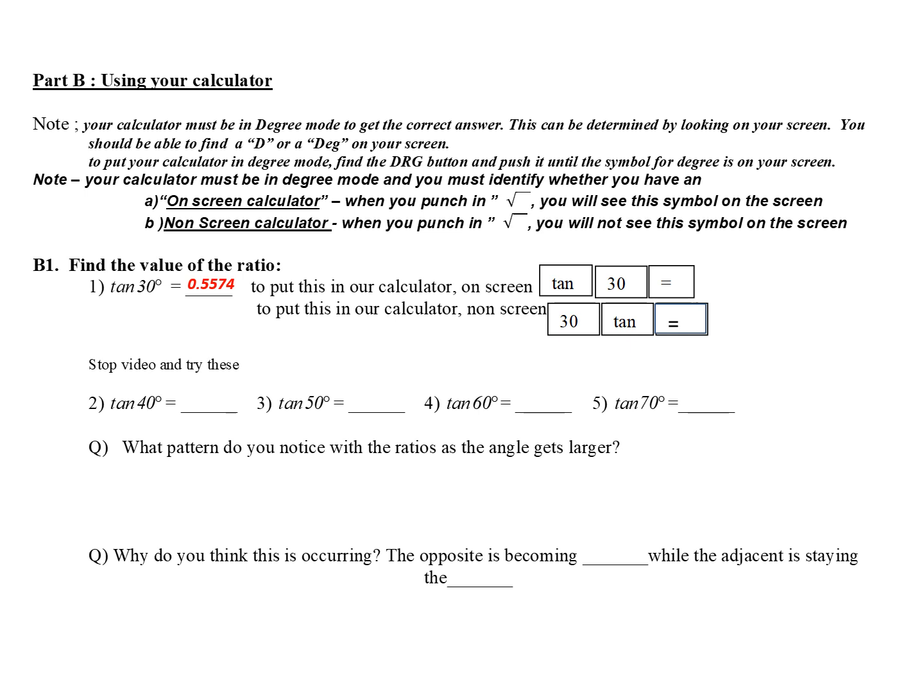Second of all, you must know what type of calculator you have. There are two kinds of calculators: on-screen and non-screen. A non-screen is the calculator where if you punch in a function like square root, it will actually show up on your screen. Try it now. If it doesn't show up, then you have a non-screen.